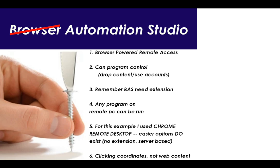That would be the future improvement on this process. Keep in mind that we're clicking on coordinates, and in more abstract uses of this technique you're not just clicking on coordinates — you're waiting for things to show up on the screen, which Browser Automation Studio does have implementations for, to identify images or content on the screen. Once we jump into Chrome Remote Desktop, it's not web-based content; it's coordinates, clicking on the screen — a regular automation tool.